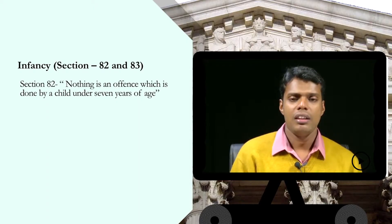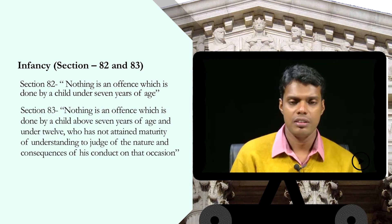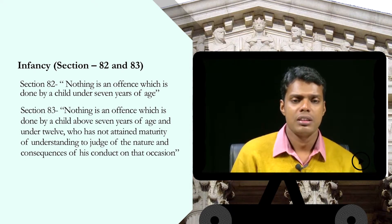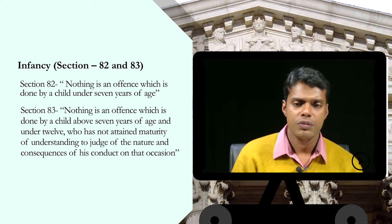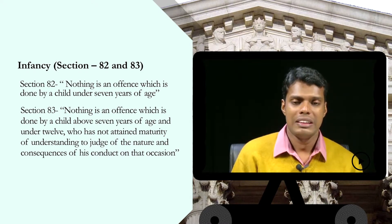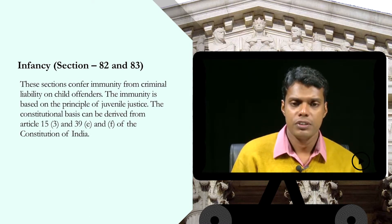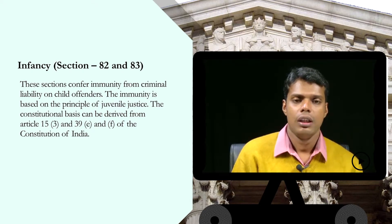Section 82 says nothing is an offense which is done by a child under 7 years of age. Section 83 says nothing is an offense which is done by a child above 7 years of age and under 12 who has not obtained sufficient maturity of understanding to judge the nature and consequence of his conduct on that occasion. These sections confer immunity from criminal liability on children of tender age.